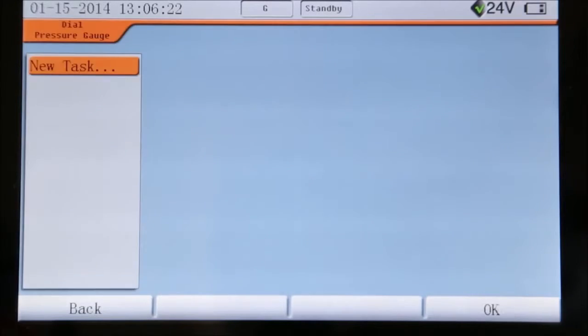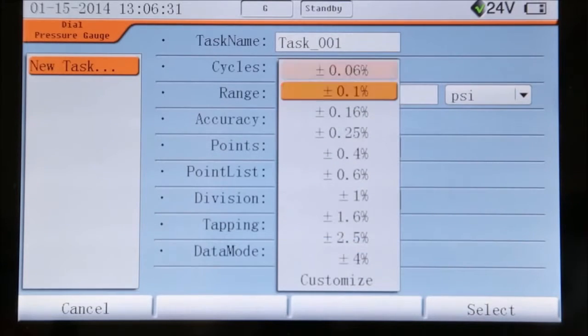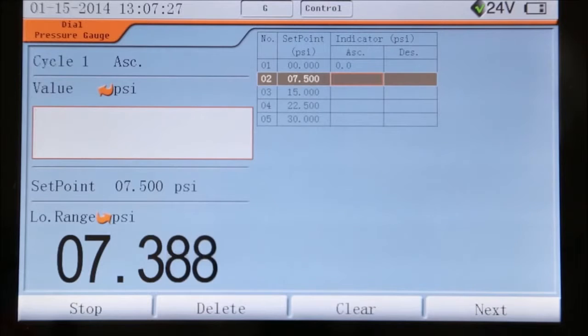The 761 is also a documenting calibrator with internal task functions that allow you to run your most common calibrations with a few keystrokes. Internal memory can store over 200 tasks and results can be uploaded to your computer using the free Additel LAN software.